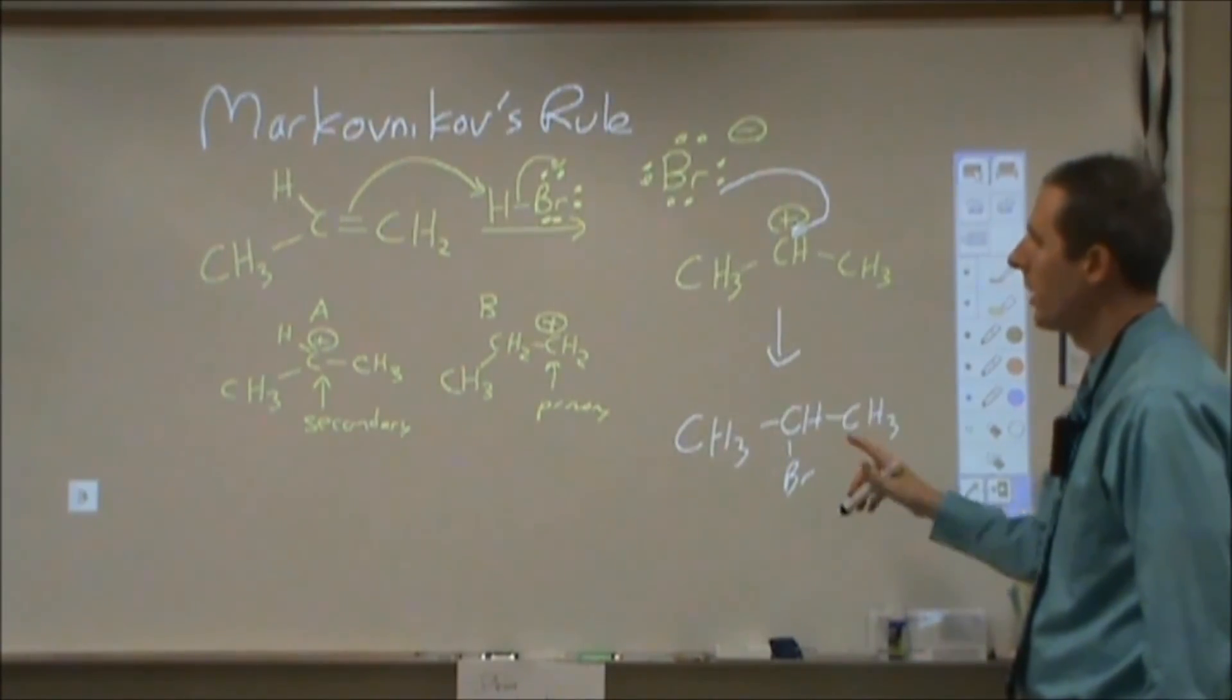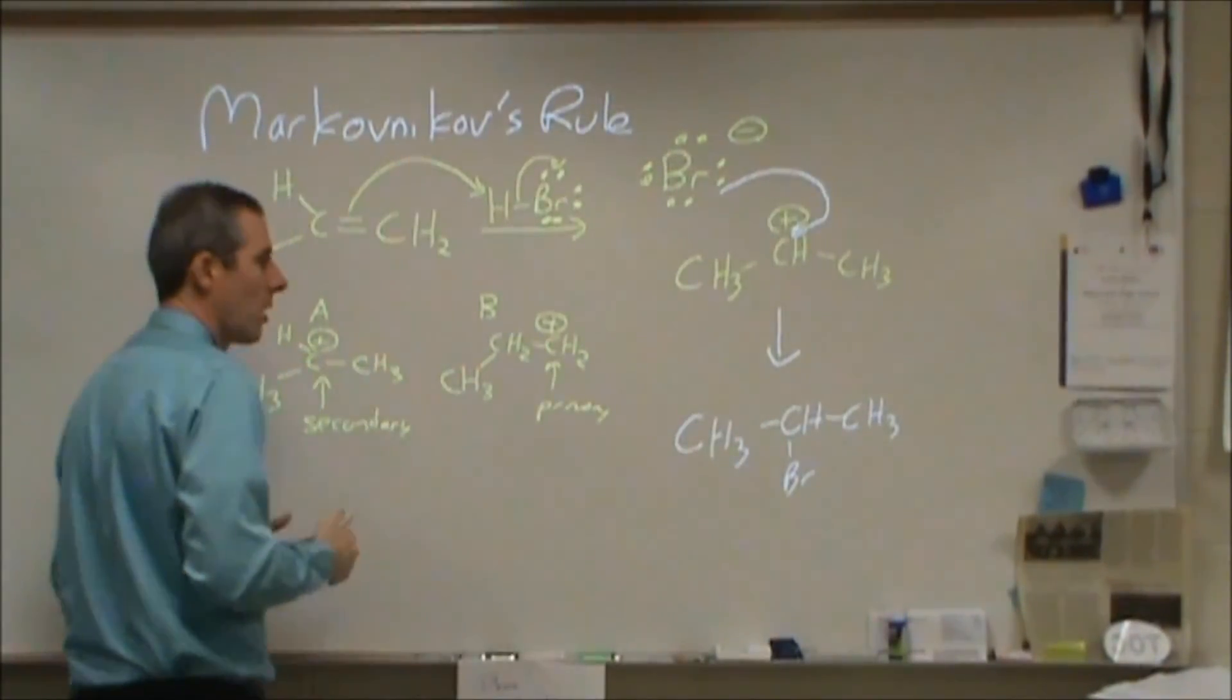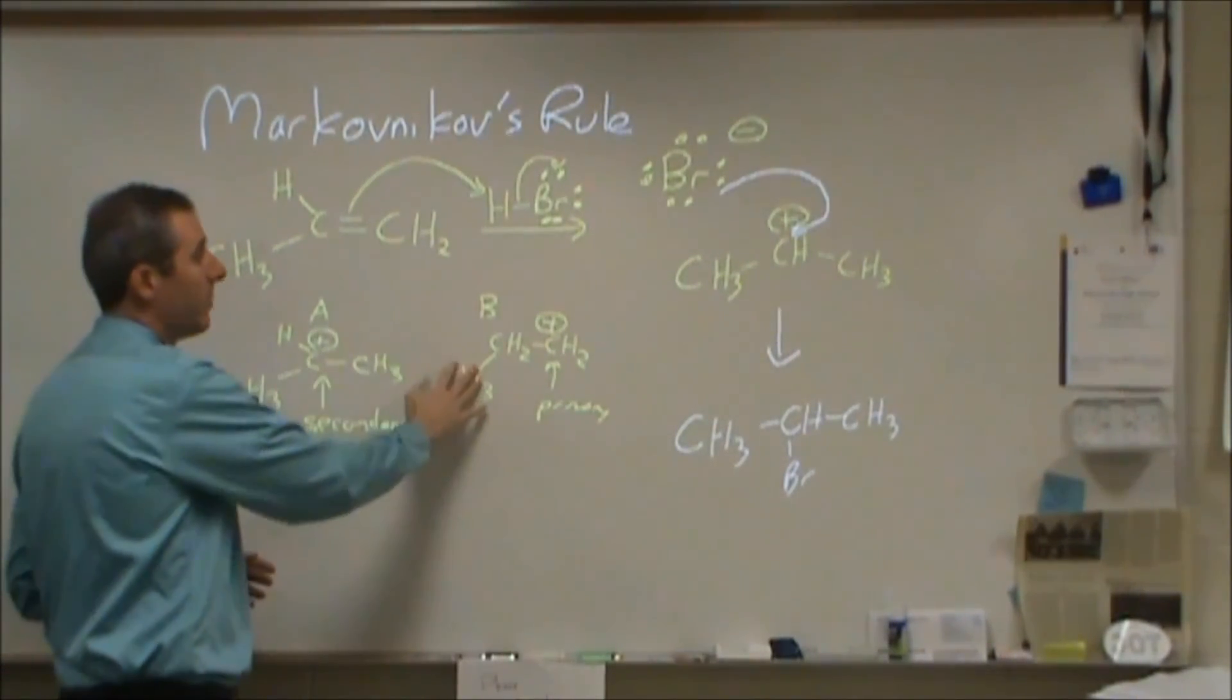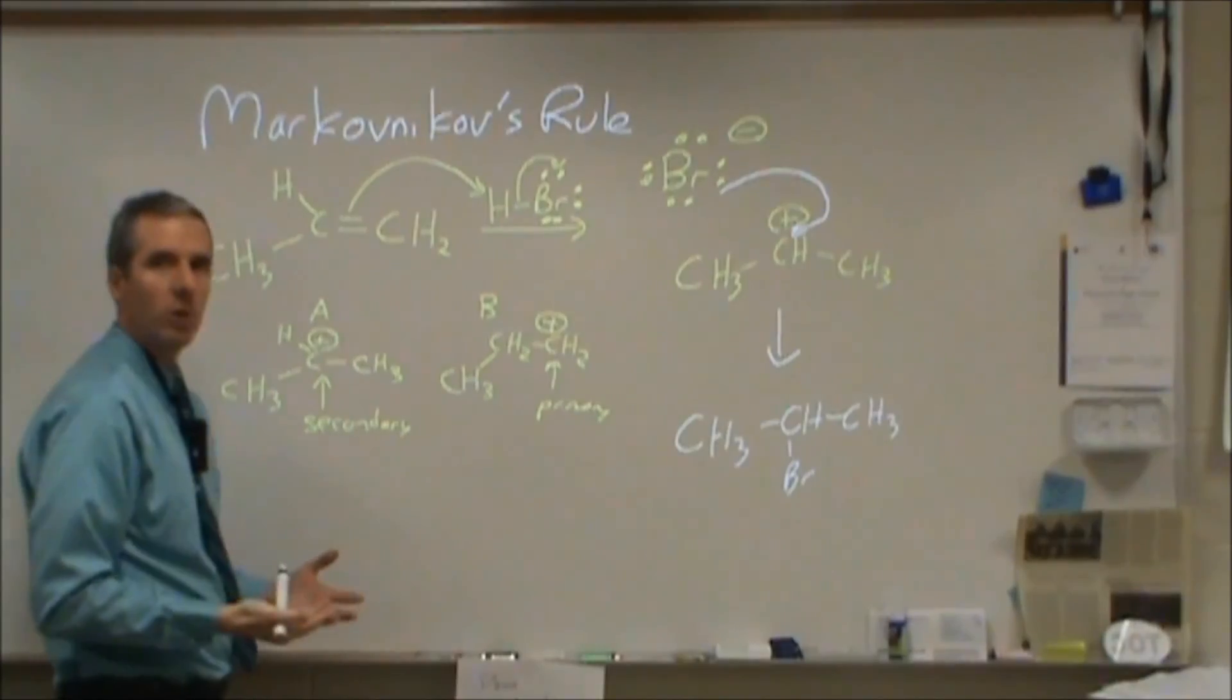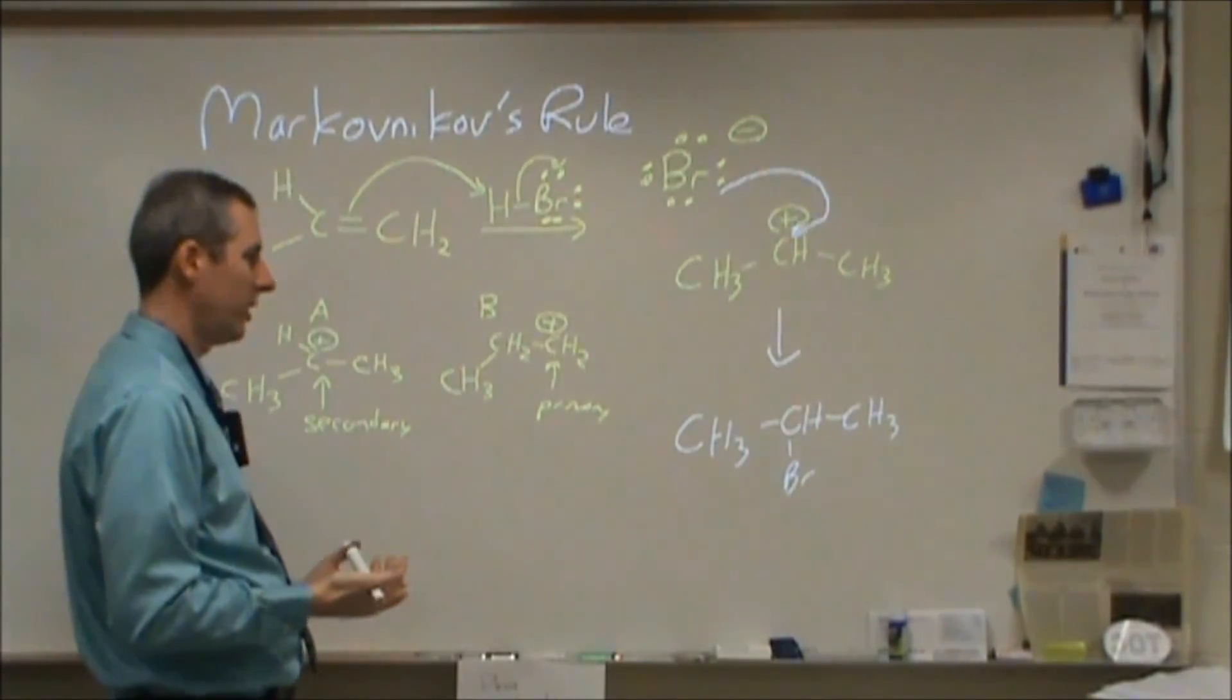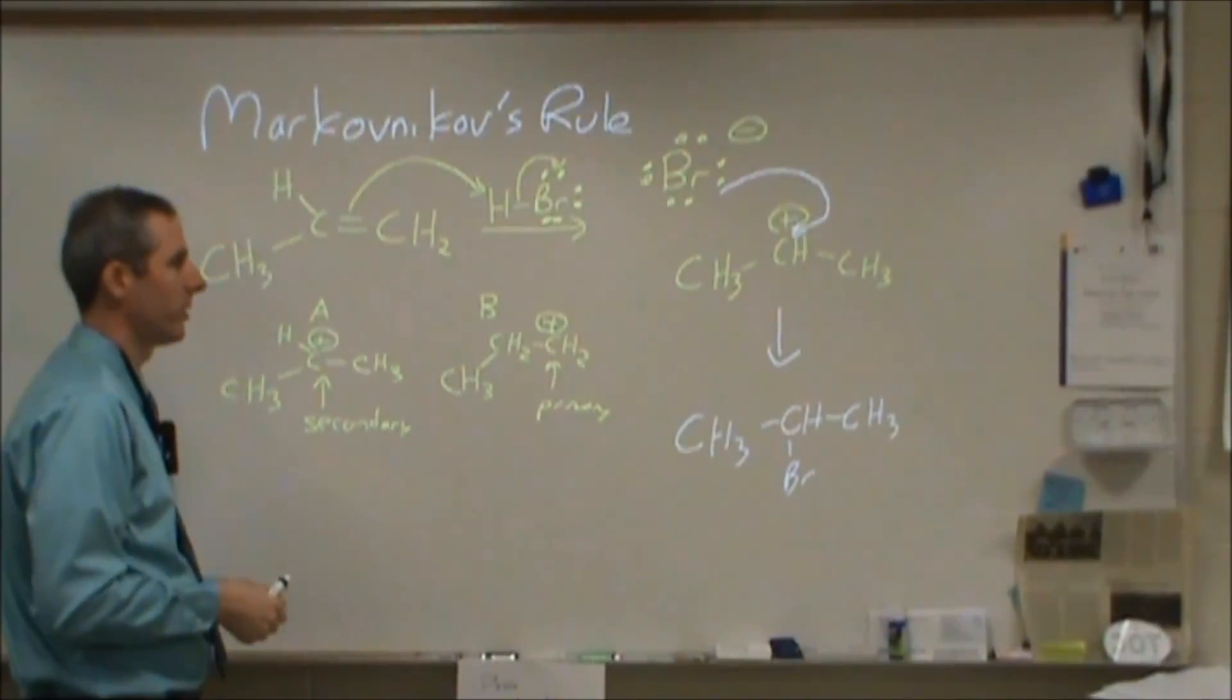In reality, you'd probably see some of both products depending on the relative stabilities of the two carbocation ions. In this case, we'd see a lot more of A than B. But in other situations where the stability gap is not as large, we'd expect to see a mixture of 1-bromo and 2-bromo products. The percentages might be quite slim for the alternate product.